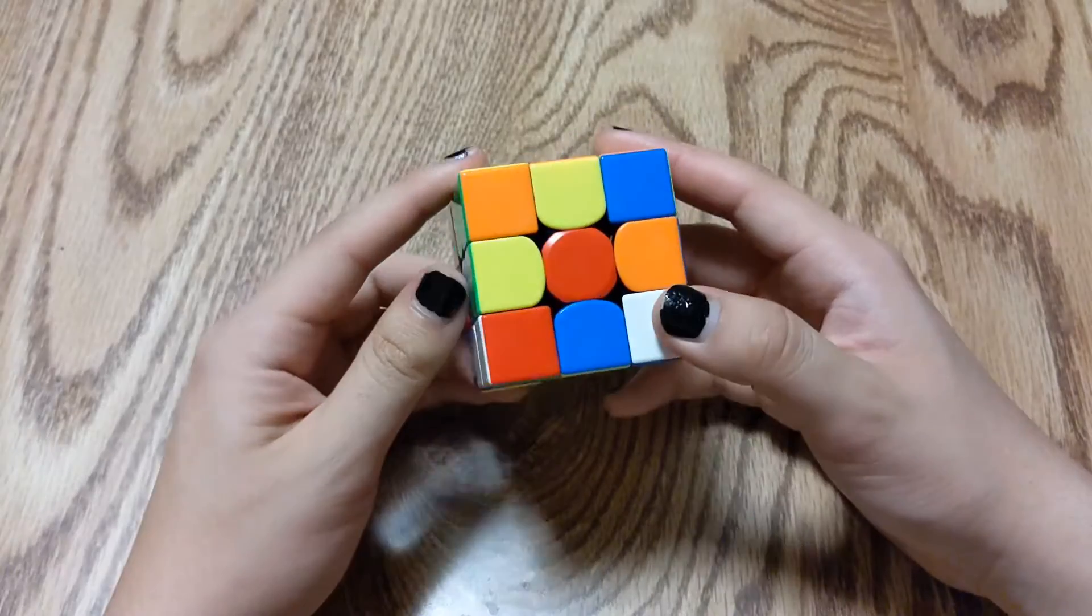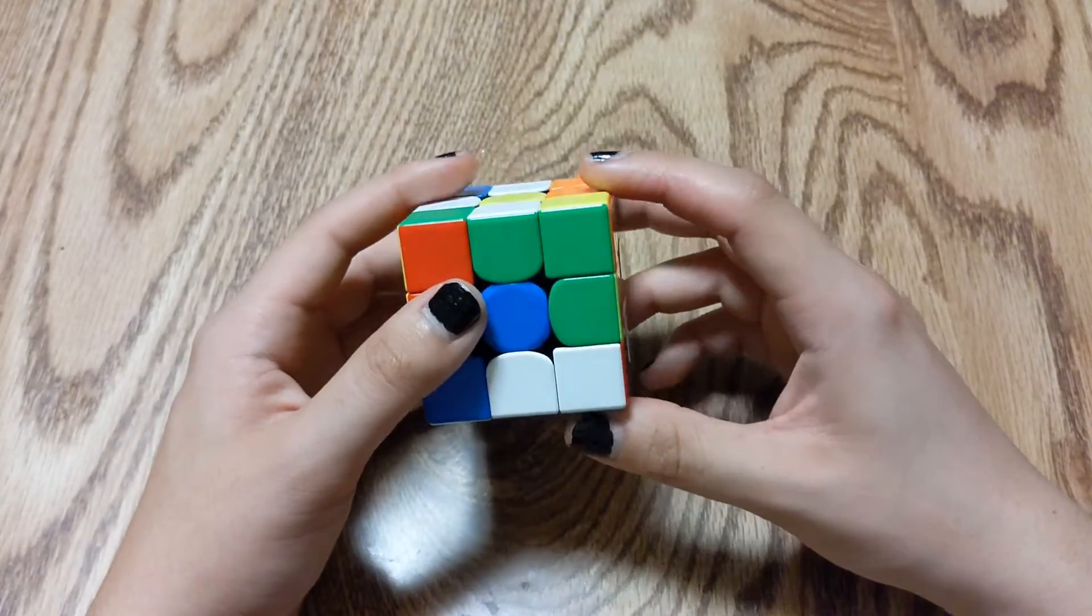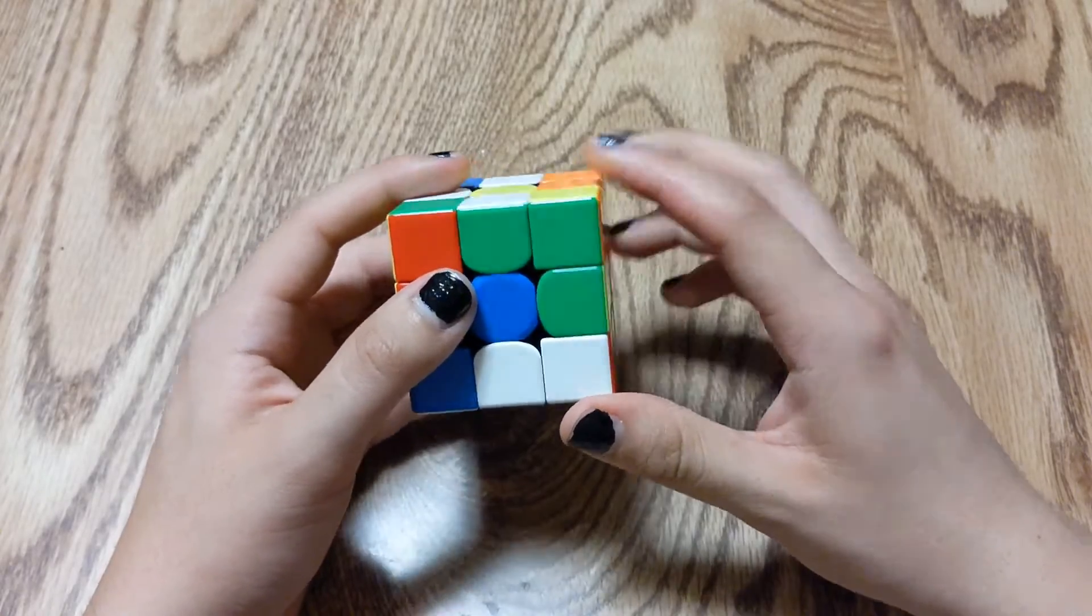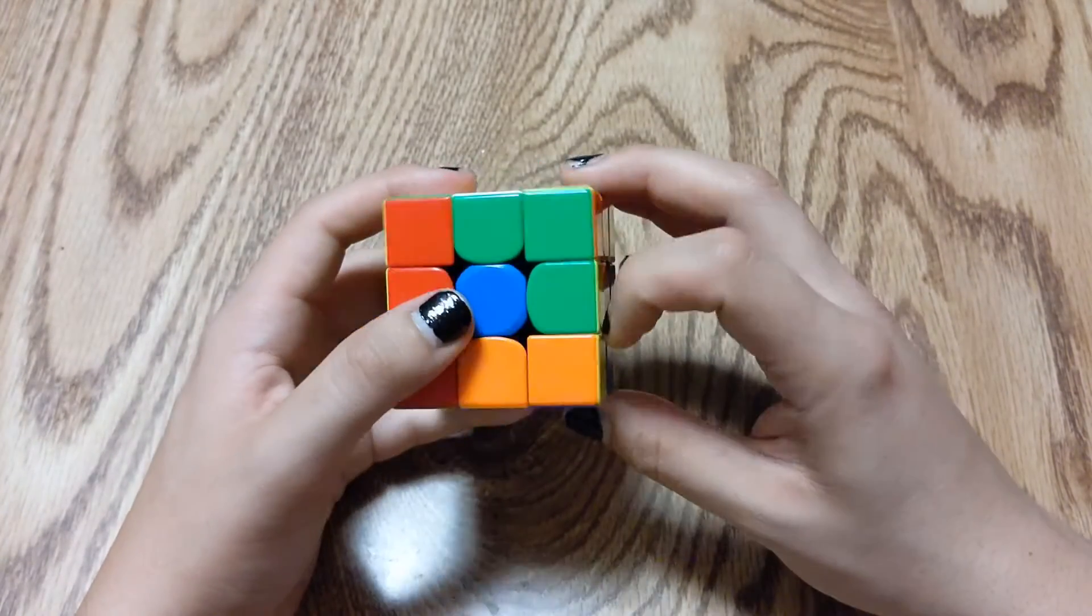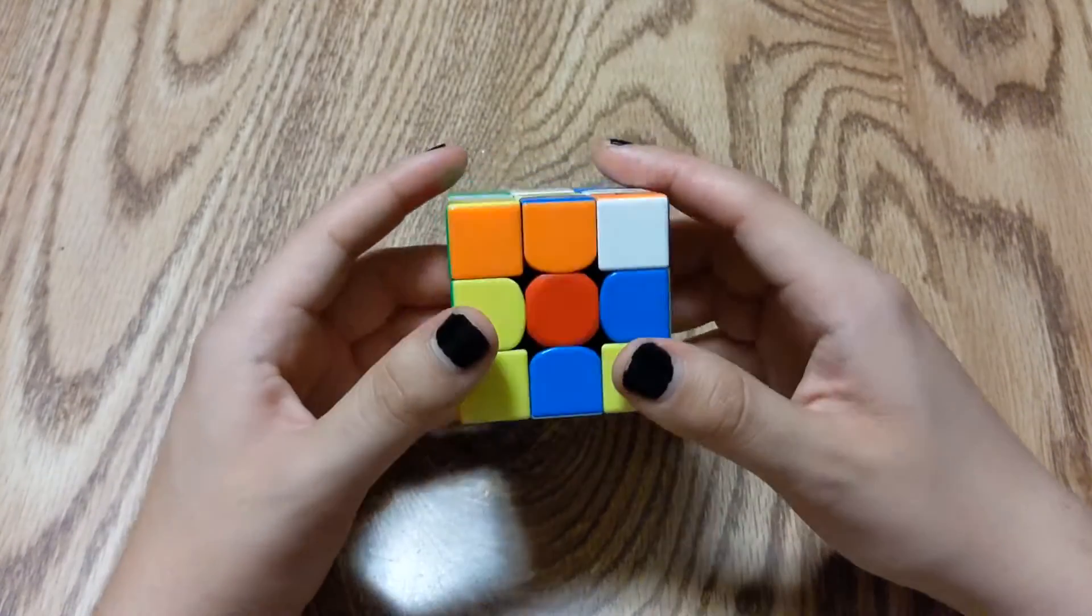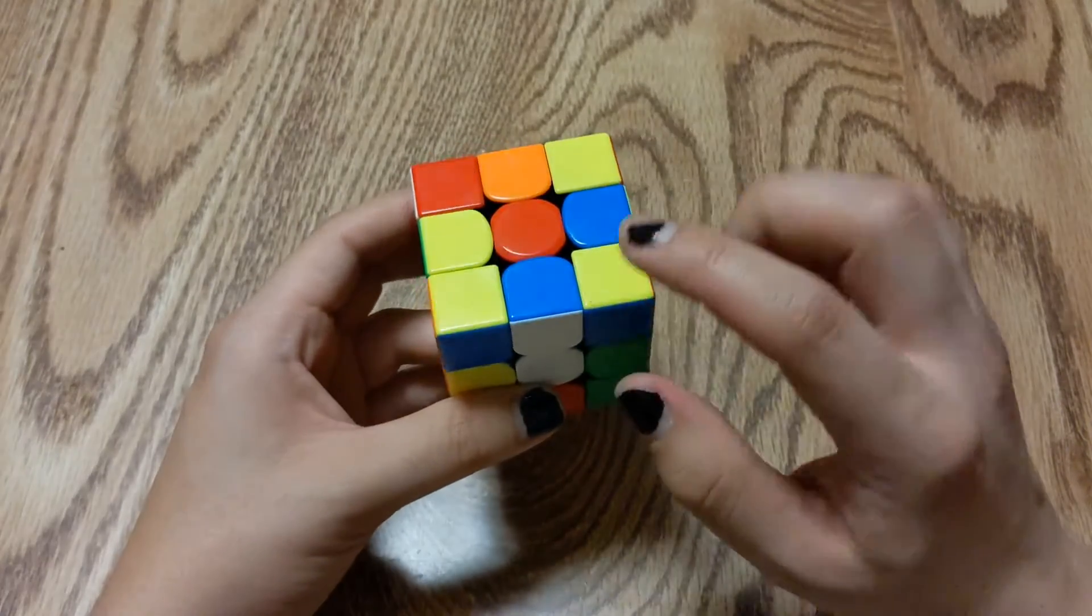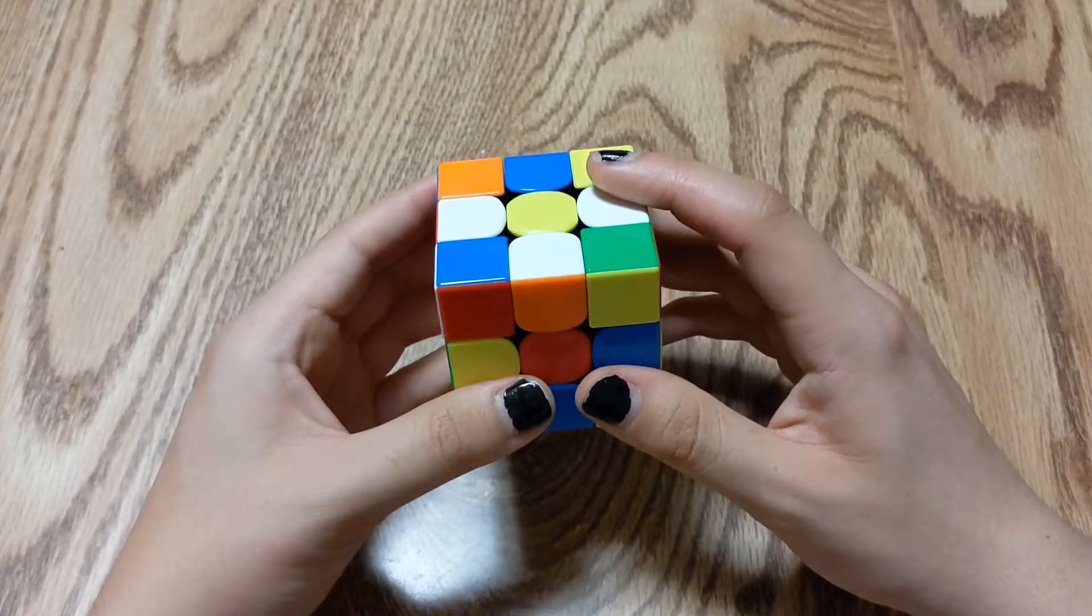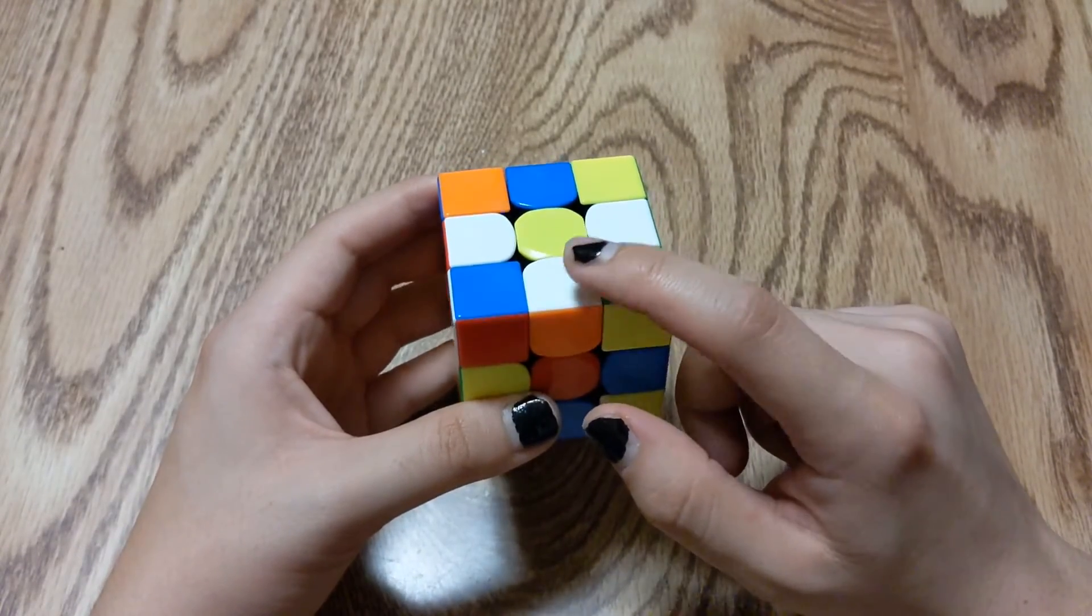We're gonna look for the last edge piece and it's right down here. But sometimes you can have an edge piece that's facing down. That's okay. You're not gonna want to put this edge piece where there's already another solved edge piece at the top.